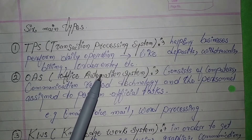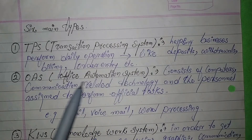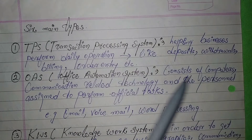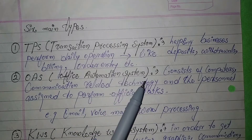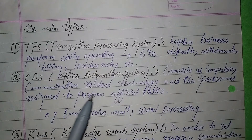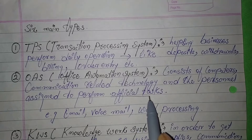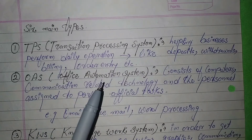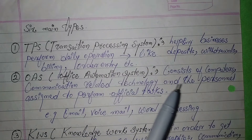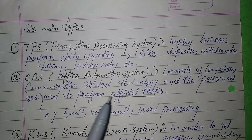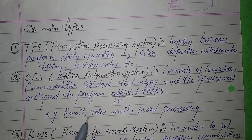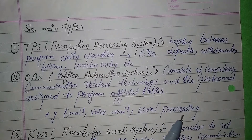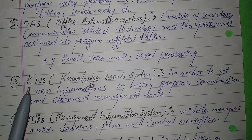The second is OAS, that is Office Automation System. It consists of computers, communication related technology, and personal assistants to perform official tasks, like sending email, voicemail, and word processing.